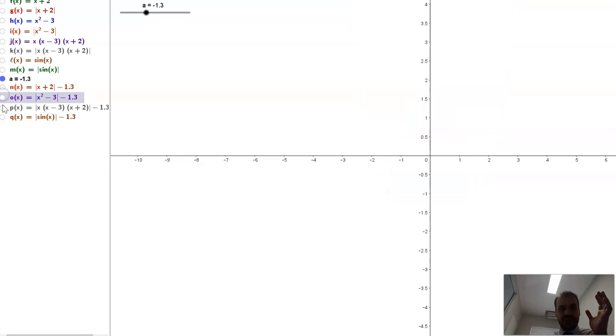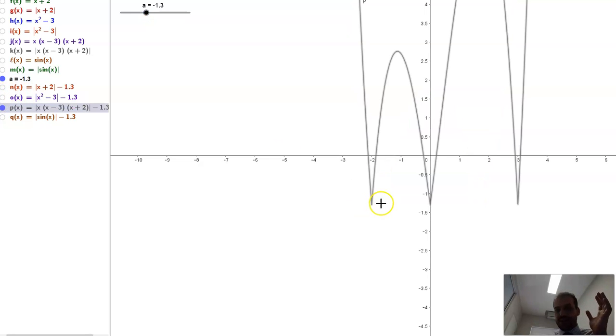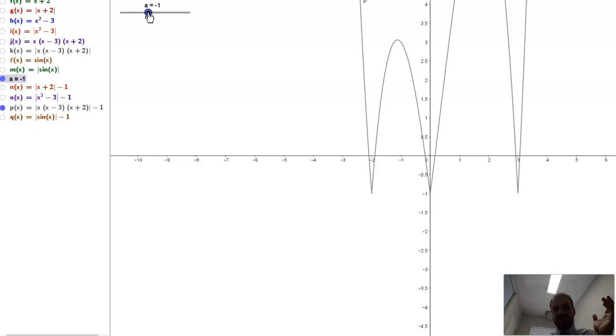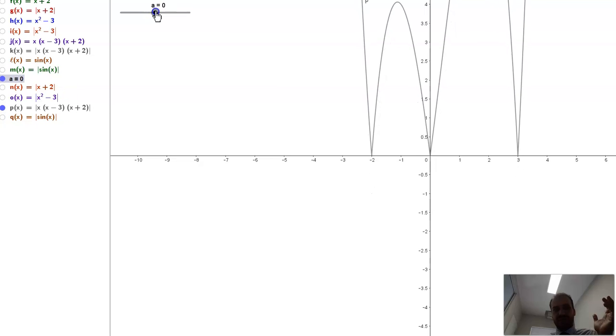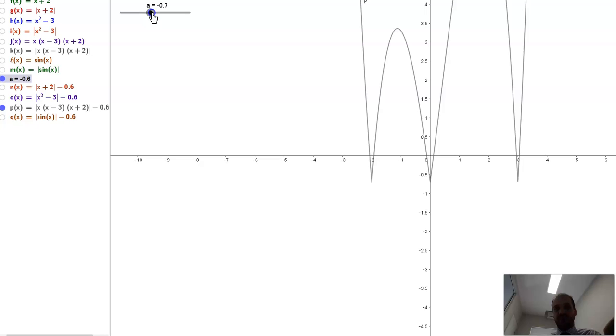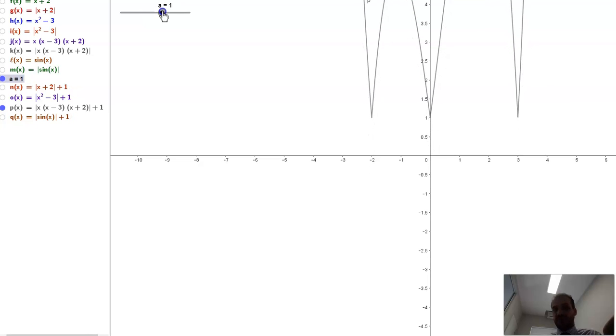And similarly, if I've got some wacky cubic, you can see that it's bouncing off an imaginary x-axis at that point, negative 1.3. But it's really just a vertical shift down to, say, negative 2 or up to 1.